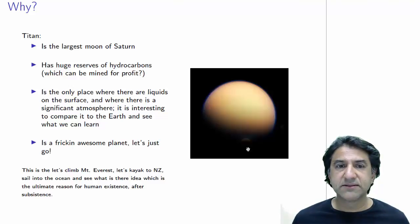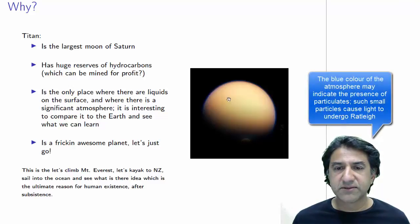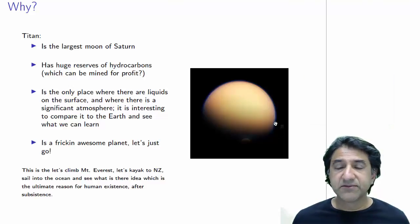It is the largest moon of Saturn. It's one of the few places where there are liquids on the surface, and one of the few planets in the solar system where there's a very significant atmosphere. So it's interesting to compare that atmosphere to Earth and see what we can learn. Here's a picture of Titan over here. It's a grayish, brownish planet with a very clear atmosphere, a very thick atmosphere. In fact, Titan has huge reserves of hydrocarbons, which can be mined for profit. Basically, it's just an awesome planet.